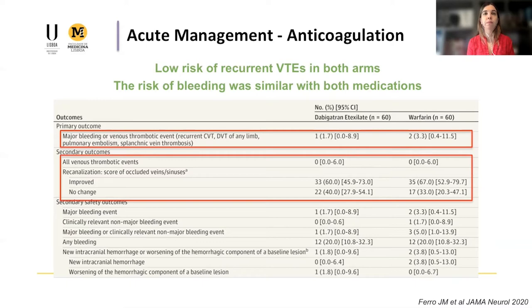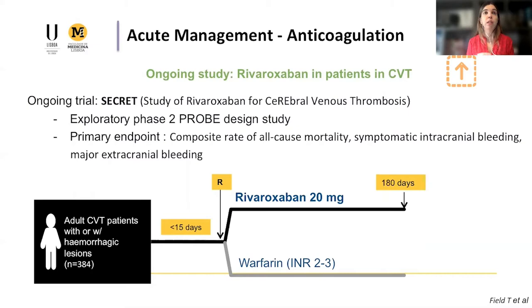There are other ongoing trials, particularly the SECRET trial, testing rivaroxaban in patients with CVT — still in exploratory phase, ongoing. Interestingly, in this trial, a DOAC could be used even as the first treatment — within the first days after diagnosis, even in patients not previously treated with heparin. We look forward to these results from the Canadian group coordinated by Tallaferro.